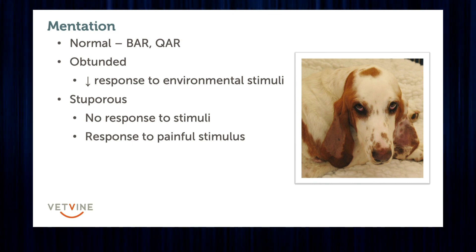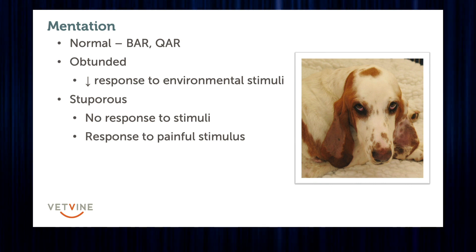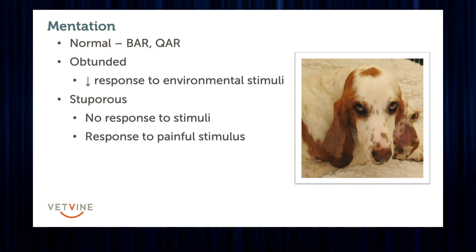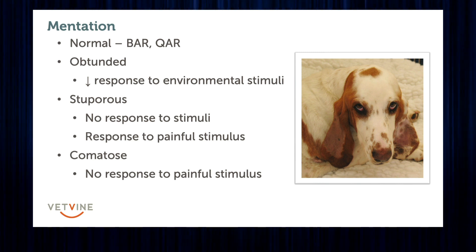The next stage is stupor. A stuporous animal is going to have no response to any environmental stimuli, but will respond to a painful stimulus. A comatose patient, on the other hand, is one that has no response to any stimuli, including a painful stimulus.